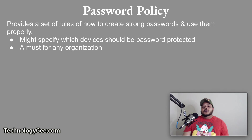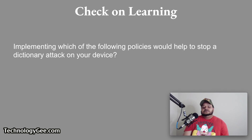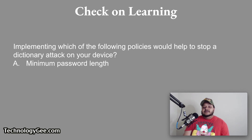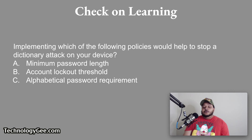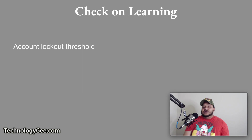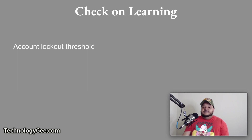Check on learning — first question: Implementing which of the following policies would help to stop a dictionary attack on your device? Minimum password length, account lockout threshold, alphabetical password requirement, or a PIN? The correct answer is account lockout threshold — if someone enters the wrong password a certain number of times, it prevents further attempts for a specified time, such as 5 minutes, 30 minutes, 24 hours, or a full week.